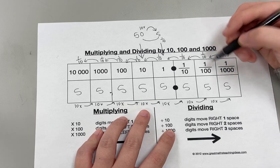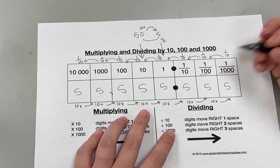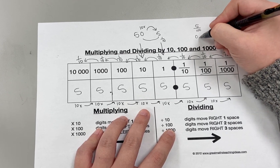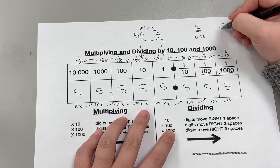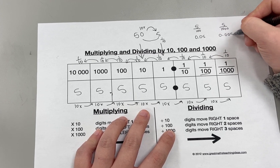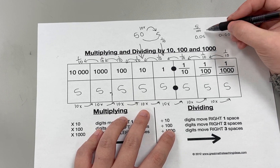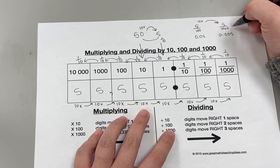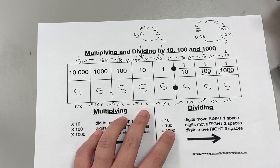Now let's find the value of the five in the hundredths place and the five in the thousandths place. The five in the hundredths place has a value of five hundredths, or we could also write it as a decimal. The five in the thousandths place has a value of five thousandths. The five in the hundredths place is ten times bigger than the five in the thousandths, which means that the five in the thousandths place is one-tenth less than the five in the hundredths place.